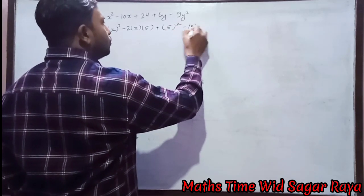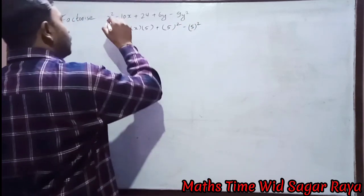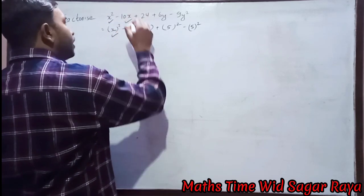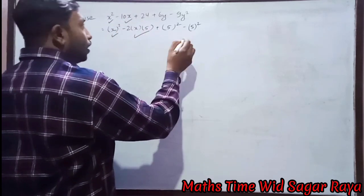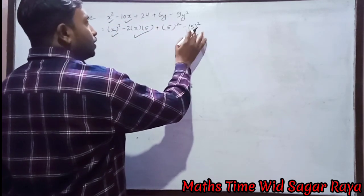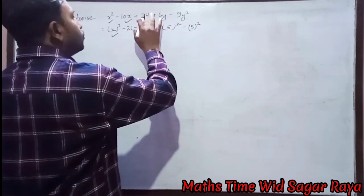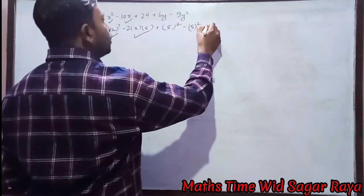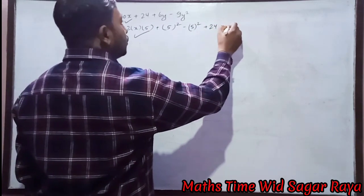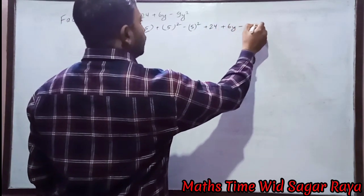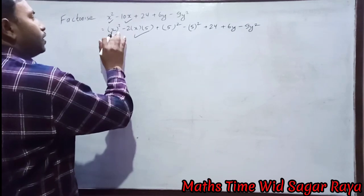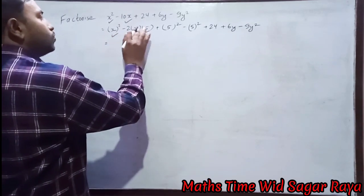But this 5² is not in the original expression, so to make its effect zero we will add -5². x² means this and -10x means this one. Now this and this will be cancelled, its effect will be zero. So remaining, these three we should write.